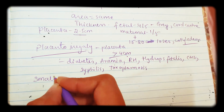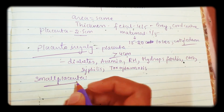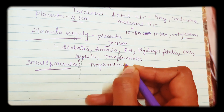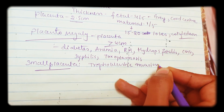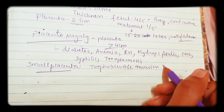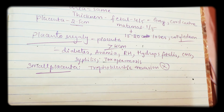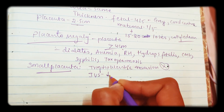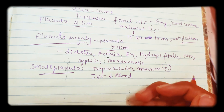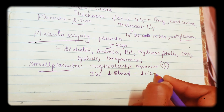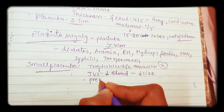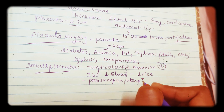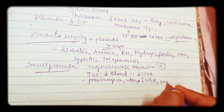Now coming to small placenta. Sometimes the placenta itself looks small. This occurs when there is no trophoblastic invasion. In normal trophoblastic invasion, it converts high-resistance spiral arteries into low-resistance vessels. Without trophoblastic invasion, the placental vessels remain high resistance, so less blood reaches the intervillous space. Because of this the size of the placenta decreases. This is seen especially in preeclampsia, utero-placental insufficiency, IUGR, and when the fetus is normally small.